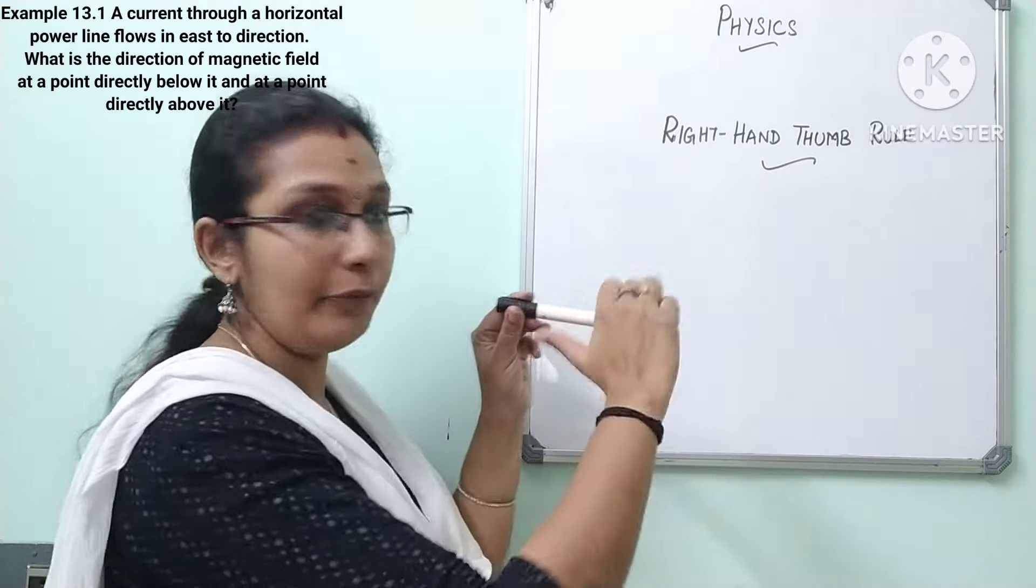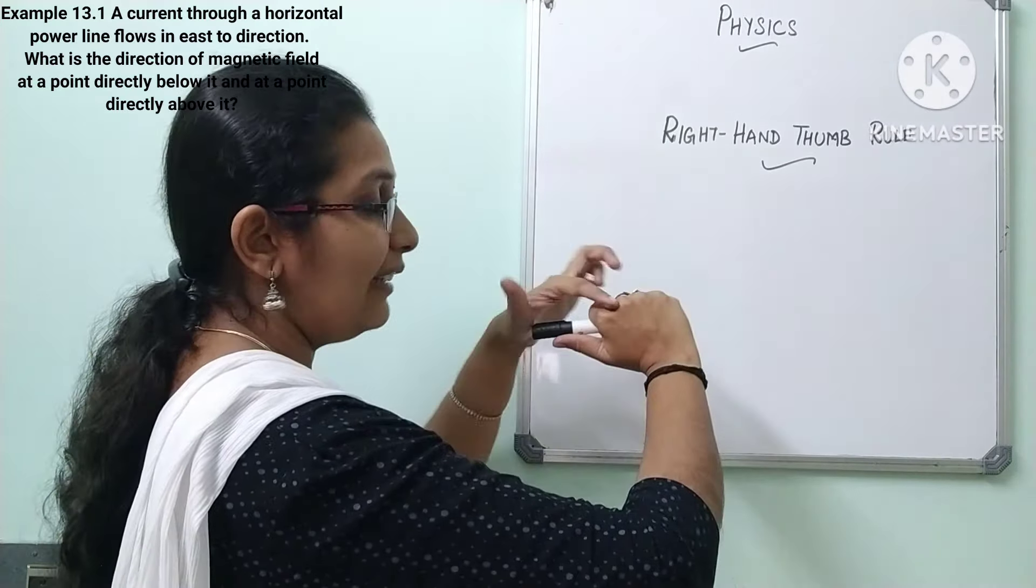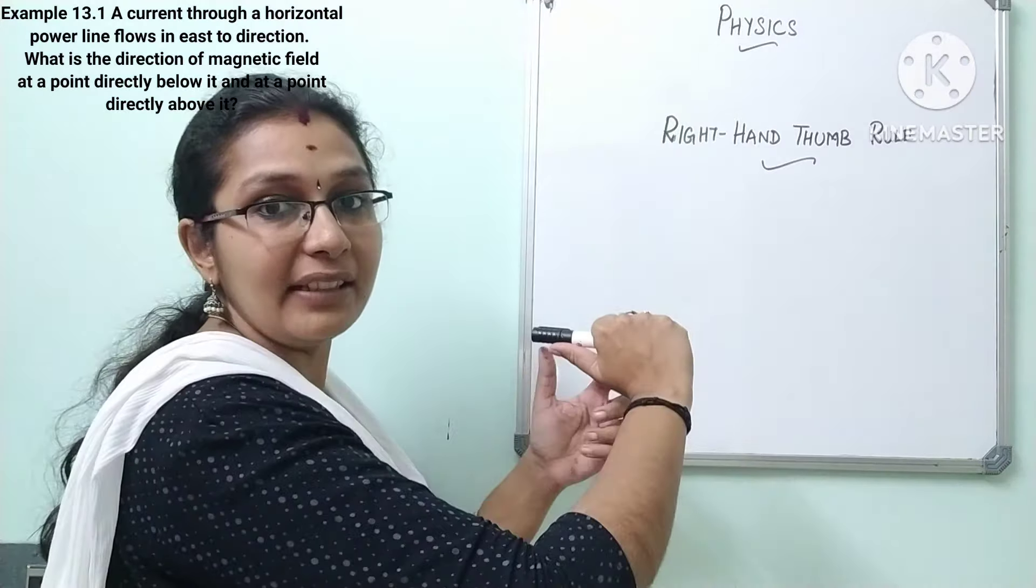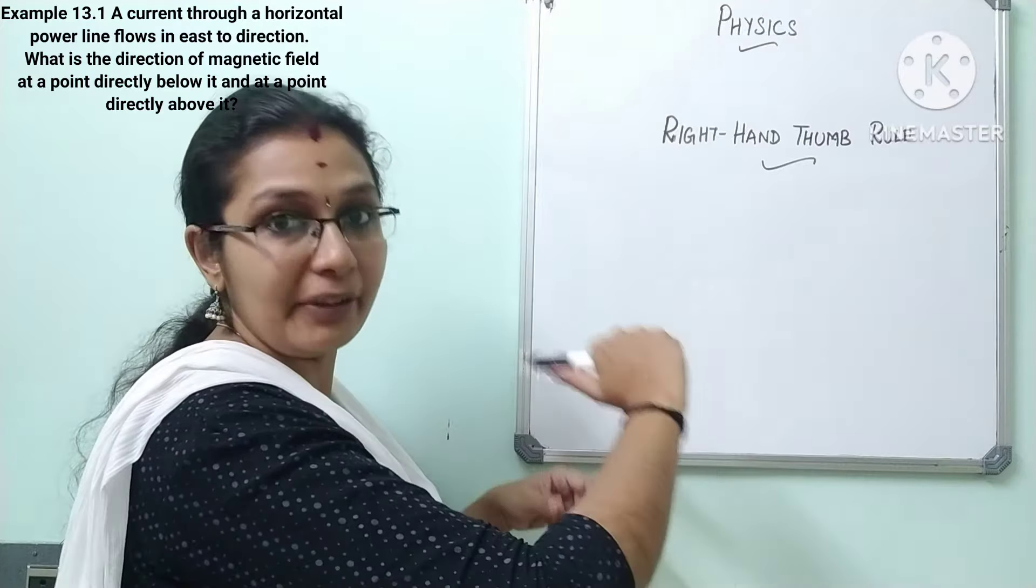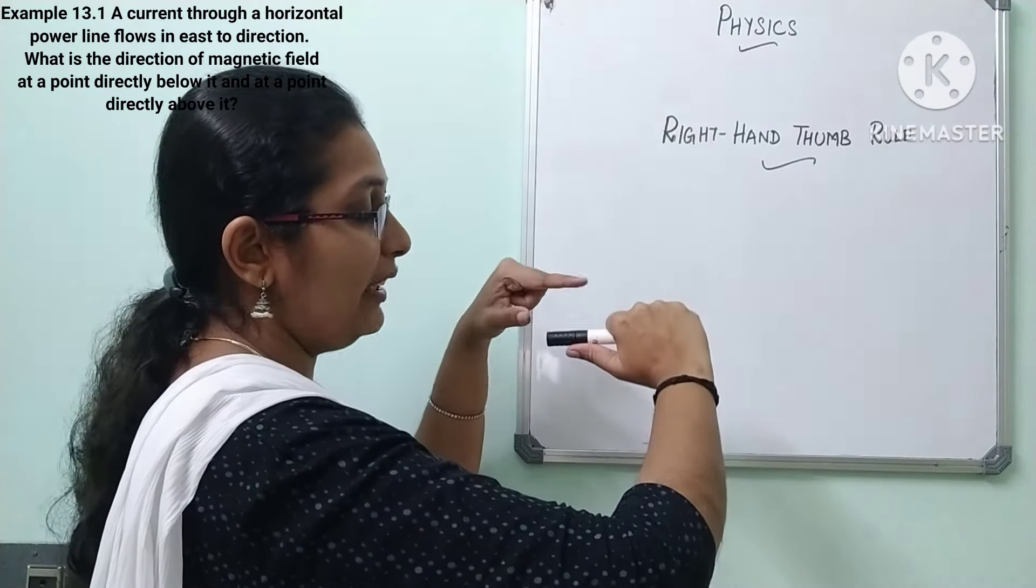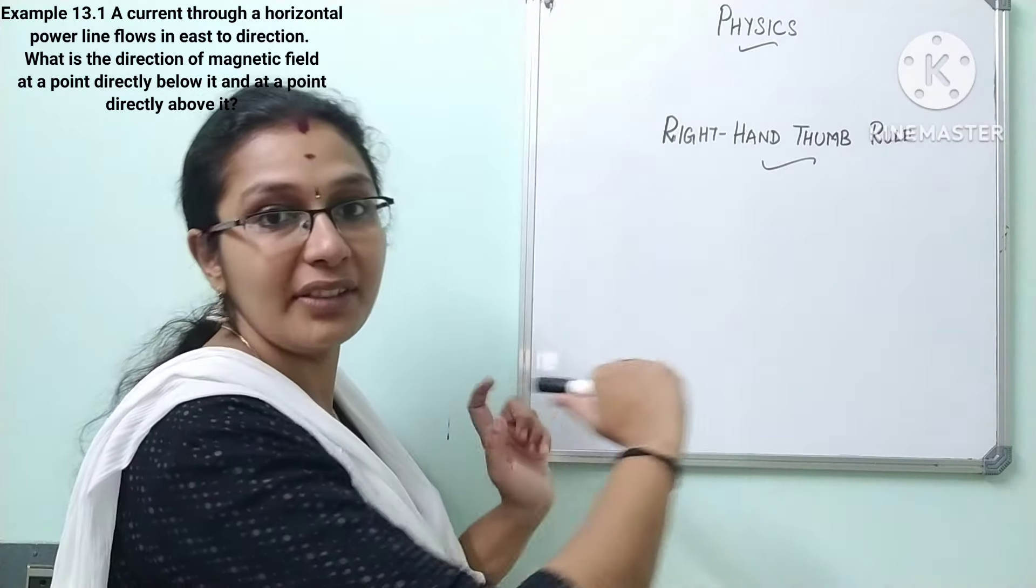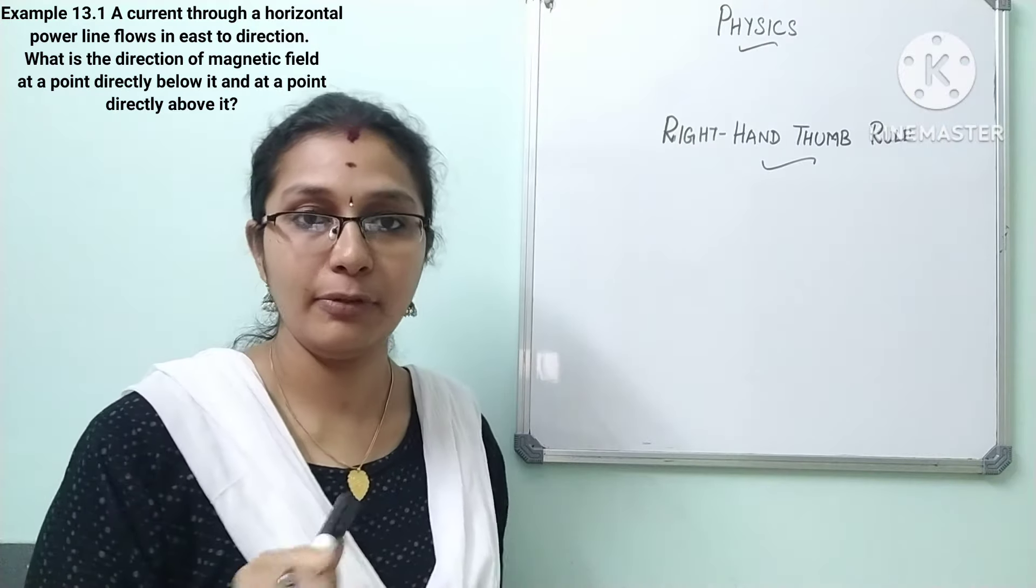So my thumb finger should face like this and the closing fingers, that is other four fingers, should be like this. Now our question is we have a point above it and below it. What is the direction of magnetic lines of force they are asking.